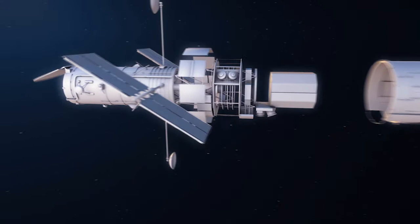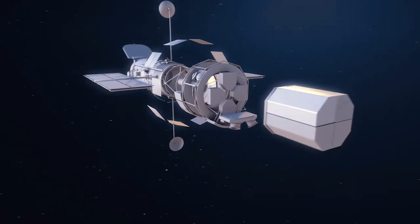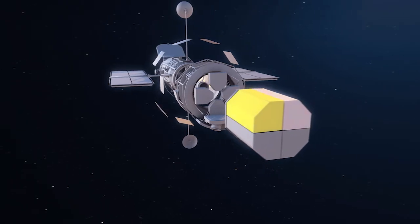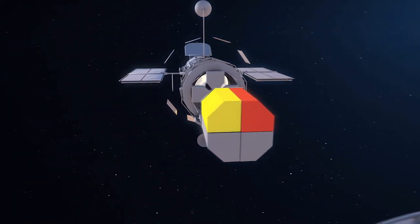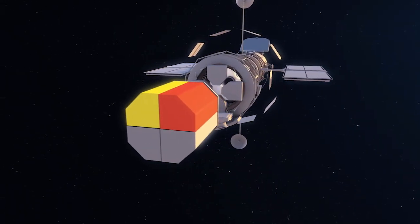Hubble is equipped with two spectrographs: the Space Telescope Imaging Spectrograph, which was installed on the telescope in 1997, and the Cosmic Origins Spectrograph, which was installed in 2009.